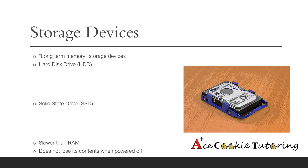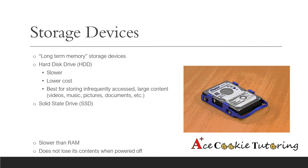Next, we're going to talk about the storage devices. These are long-term memory storage devices, as opposed to the short-term memory of the RAM we talked about earlier. There are two main types of storage devices: the hard disk drive, or HDD, and the solid state drive, or SSD. The hard disk drive is slower than the SSD. It's also lower cost and it's best for storing infrequently accessed large content like videos, music, pictures, and documents.